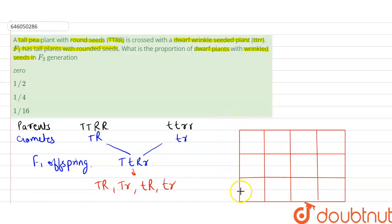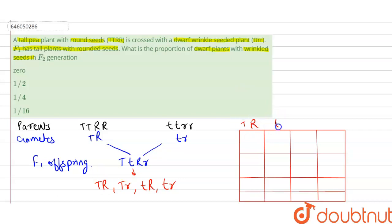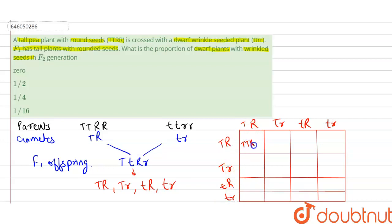We can draw a Punnett square here. The gametes along both axes are: TR, Tr, tR, and tr — same on both sides because it is self-pollinated. The offspring combinations are filled into the boxes accordingly.